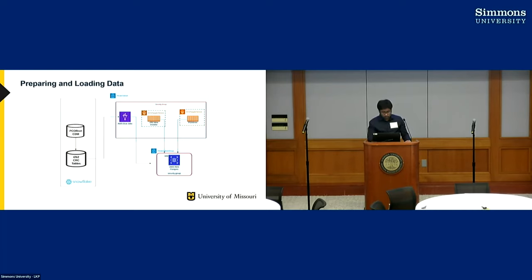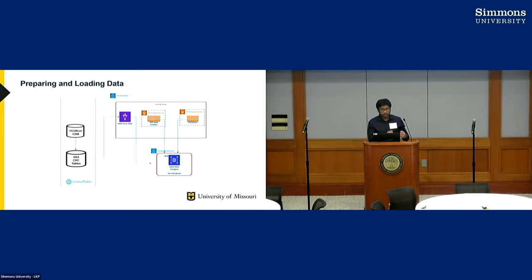We containerized the I2B2 data installer and ran it as a service, and loaded the initial schema and database required for I2B2. Then we mapped our PCORNet CDM and created the fact tables and dimension tables. Then we ran AWS Glue jobs to load the data directly from Snowflake to RDS. The AWS Glue jobs are Spark jobs that can read data in parallel. We also have a PGAdmin web client acting as a query editor to visualize and maintain the database.